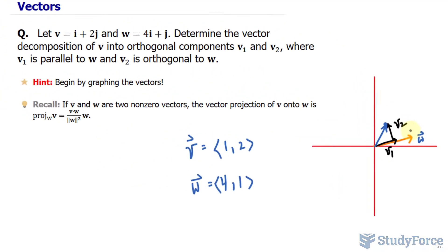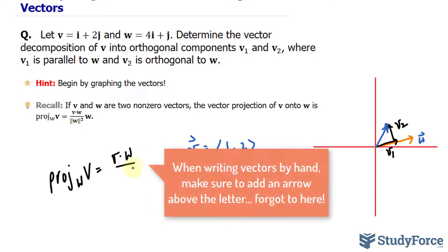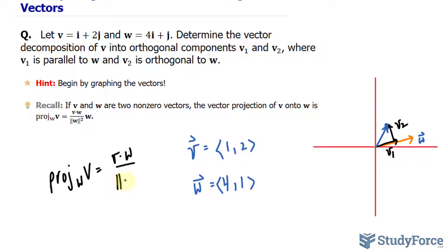To find information about V₁, we use the formula: the projection of V onto W is equal to V times W—the dot product—and underneath is the magnitude of W raised to the power of 2, multiplied to the vector W again.